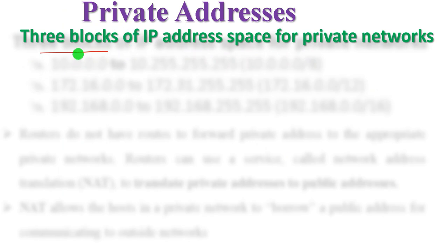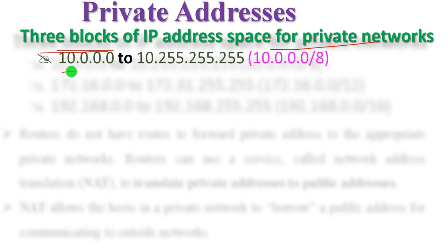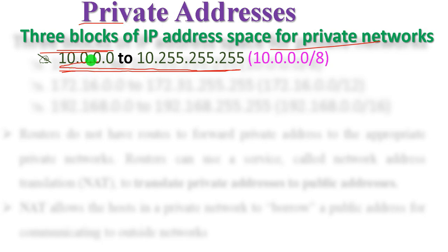For the sake of creating a private address, three blocks of IP address space for private networks are reserved. The first block is 10.0.0.0 to 10.255.255.255. The second block is 172.16.0.0 to 172.31.255.255. The third block is 192.168.0.0 to 192.168.255.255. These are the reserved private IP address ranges.